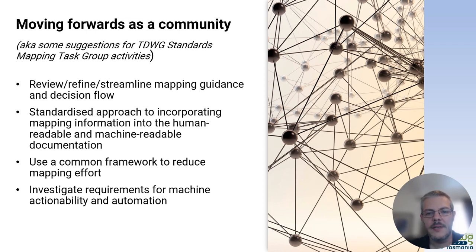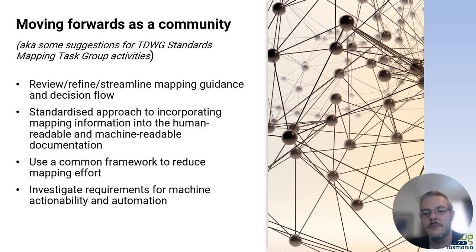Moving forward, the formation of the TDWG Standard Mapping Task Group provides a great opportunity to work together on maximizing the communal gains and reducing some of the pain points involved. Hopefully our experience in the Latimer Core development can contribute to that. One potential approach could be to review the mapping decision flow we used to see if it could be improved and used more widely as a guidance tool. It could also be good to think about how mapping documentation might be incorporated into TDWG standard documentation for both human and machine users, and whether a common framework for storing that documentation across multiple standards would help. There is also potential to start thinking about more advanced applications and automation to help with transformation of data between standards and to support the ongoing maintenance of the mappings themselves.